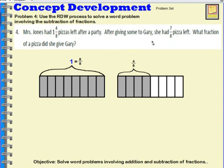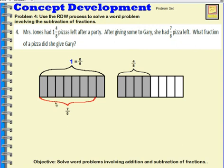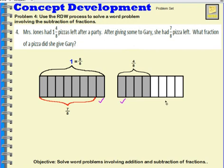Now I'll take another part of the story — it says after giving some to Gary, she had 7 eighths of the pizza left. So I can show what 7 eighths would be: 1, 2, 3, 4, 5, 6, 7. This is showing 7 eighths. So whatever this remaining portion is — this piece and these pieces — must be what was given to Gary. Counting those up: 1 eighth, another eighth, another, another, and another — that's 5 eighths. That's what Mrs. Jones gave to Gary.